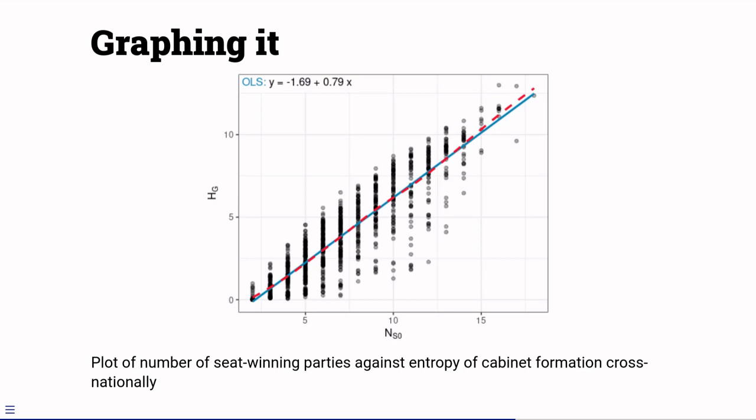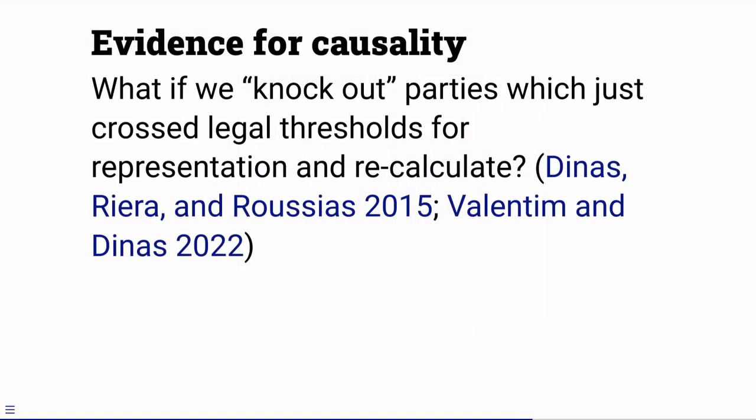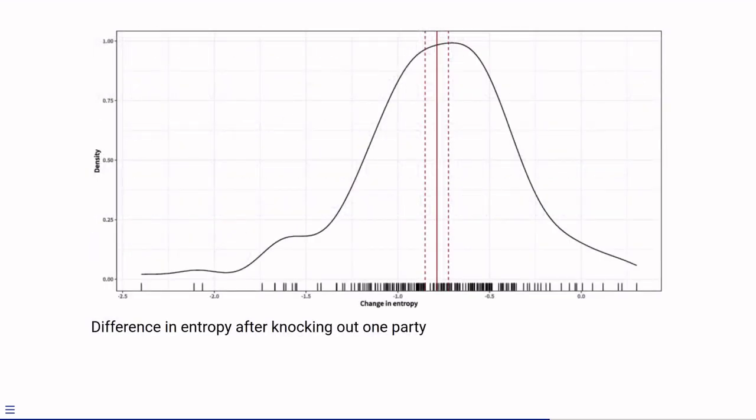Now that's just an association. But because I've got information on lots of different parliamentary democracies, including democracies where there are legal thresholds for representation, I can construct some nice counterfactuals. Indeed, using the same design as Dinas and Valentin, I can identify parties which were just above a threshold, subtract their votes until they fall below the threshold, and calculate a counterfactual seat distribution. I can then use the same coalition model I used before and recalculate probabilities and thus entropy in this counterfactual. I can then calculate the difference in entropy between what actually happened and the counterfactual with one fewer party. Averaging across all these counterfactuals, I find that the change in entropy when you knock out one party is almost exactly three quarters of a bit.